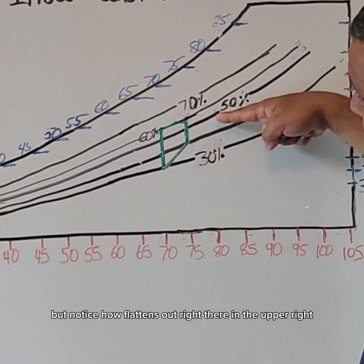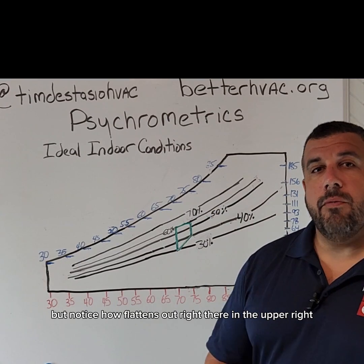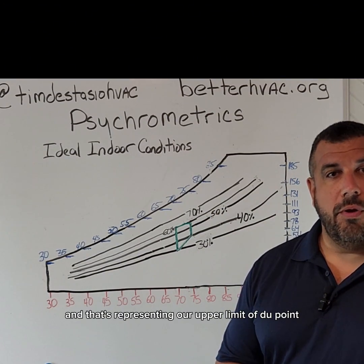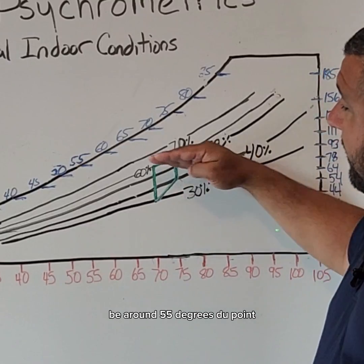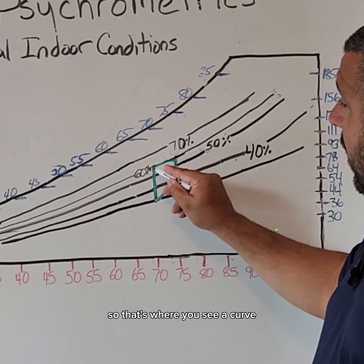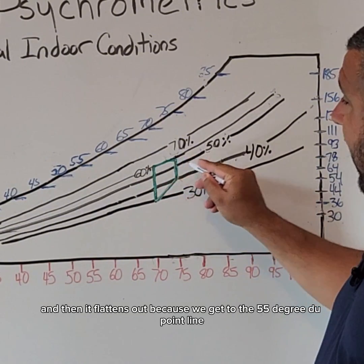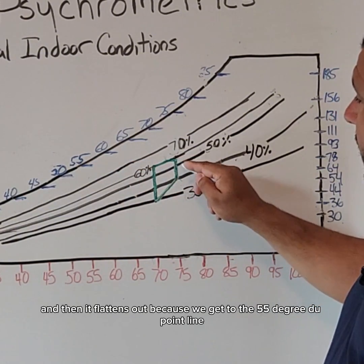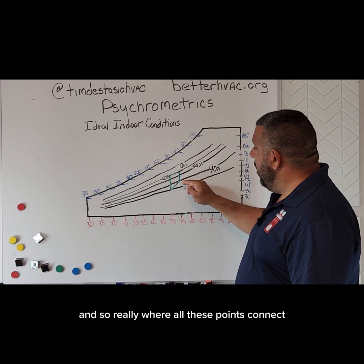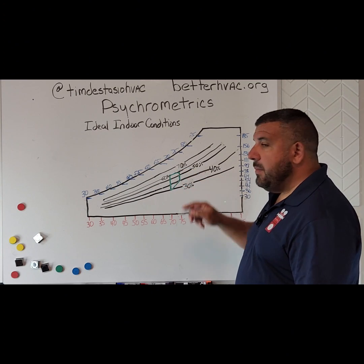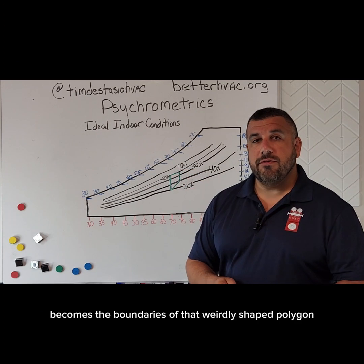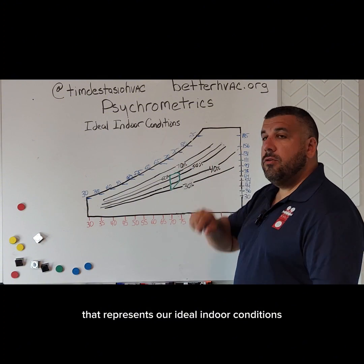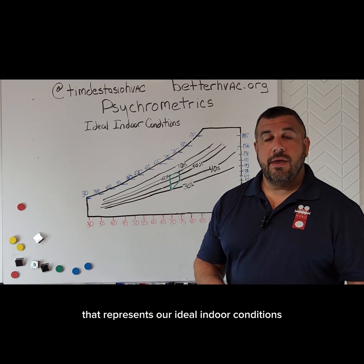Notice how it flattens out right there in the upper right — that's representing our upper limit of dew point being around 55 degrees dew point. That's where you see the curve, and then it flattens out because we get to the 55 degree dew point line. Where all these points connect becomes the boundaries of that weirdly shaped polygon that represents our ideal indoor conditions.